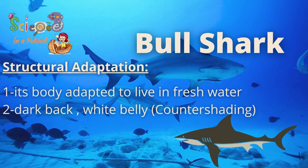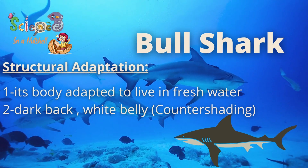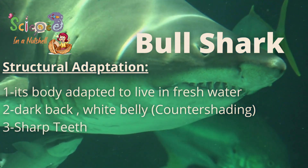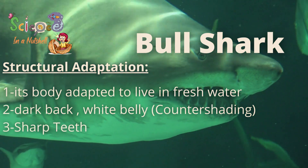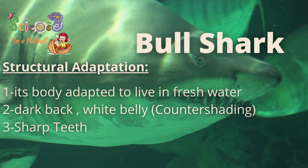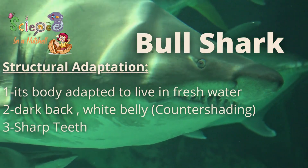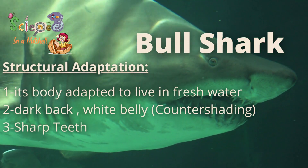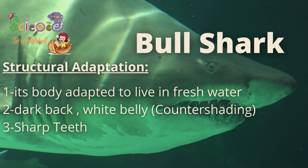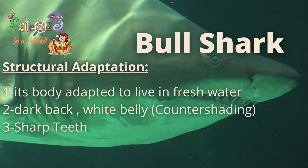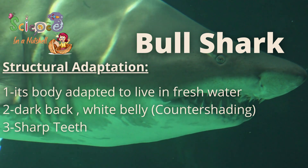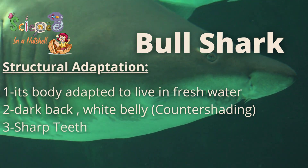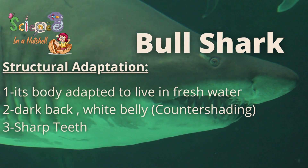Don't forget the shark has sharp teeth, and this is to help it sneak up on its prey and tear their flesh into pieces. That was everything you need to know about the structural adaptation of the bull shark.